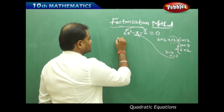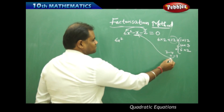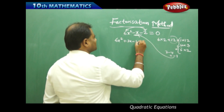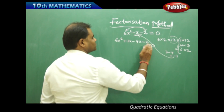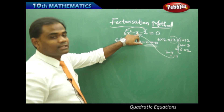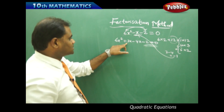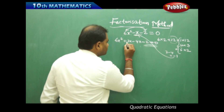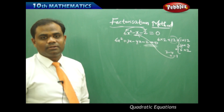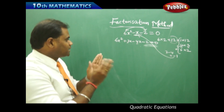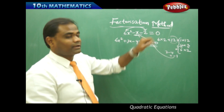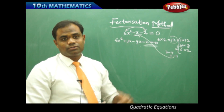Therefore, I split minus x as plus 3x minus 4x, so that the equation becomes 6x squared plus 3x minus 4x minus 2 equals 0. Because 3x minus 4x is minus x, I write it in the form of the factors 3 and 4 as obtained for 12, so that factorization is possible. This is very important to note.